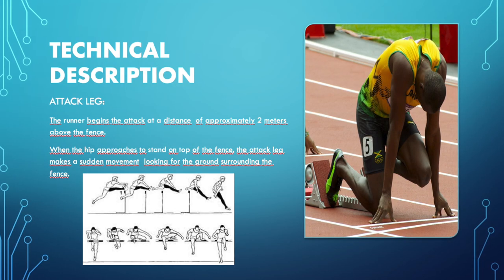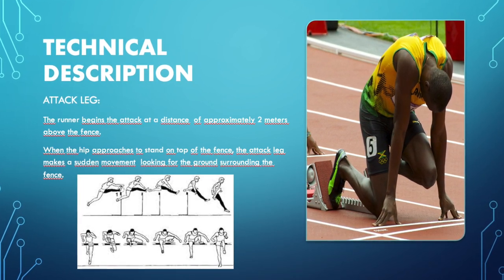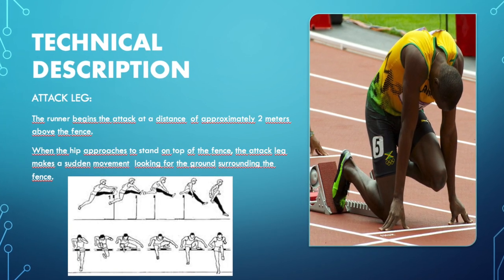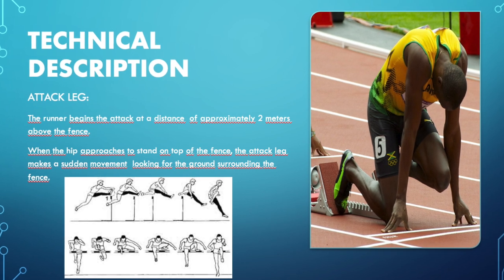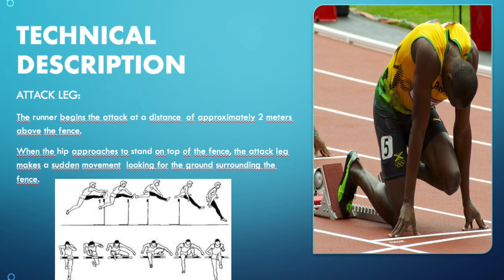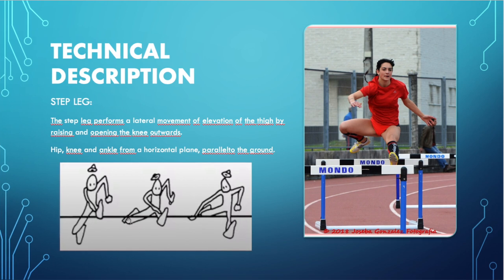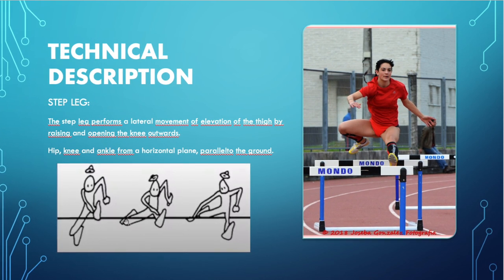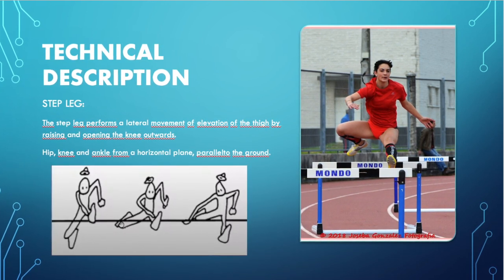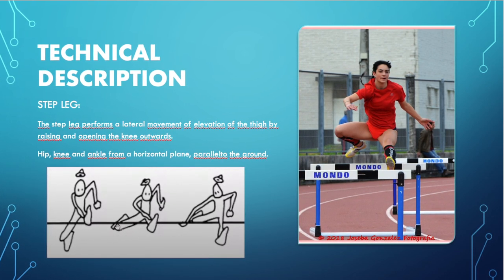Now I am going to talk about the technical aspects. This point has 4 parts. The first is the attack leg. The runner begins the attack at a distance of approximately 2 meters before the hurdle. When the hip approaches to stand on top of the hurdle, the attack leg makes a sudden movement looking for the ground on the other side of the hurdle. The second part is the trail leg. The trail leg performs a lateral movement of elevation of the seat by raising and opening the knee outwards, with the hip, the knee, and the ankle in horizontal planes parallel to the ground.